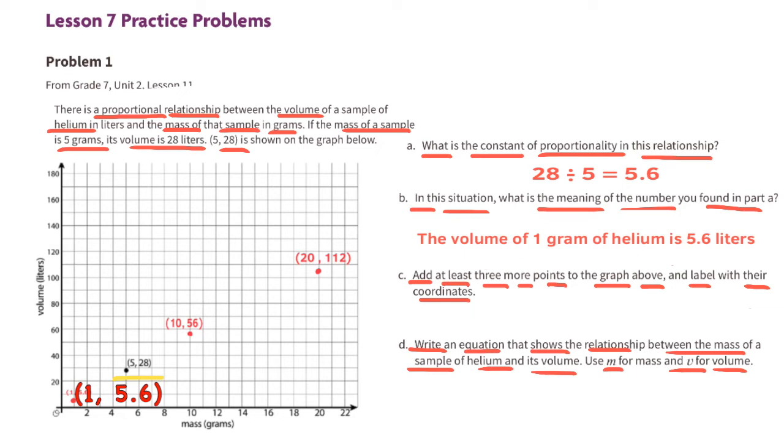Part d: Write an equation that shows the relationship between the mass of a sample of helium and its volume. Use m for mass and v for volume. V equals 5.6m. This means that the amount of volume is going to be equal to 5.6 times the mass.